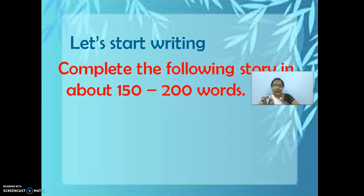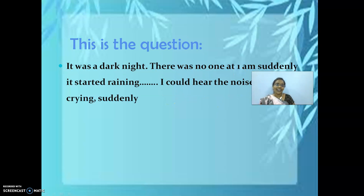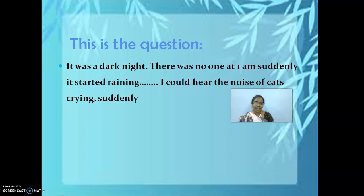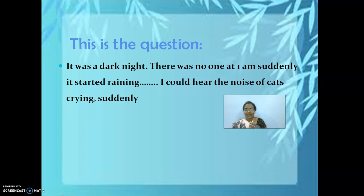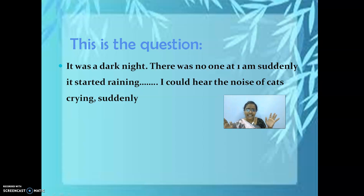Let's start writing the story now. Complete the following story in about 150 to 200 words — word limit plays an important role. This is the story as it will be given in your board exam. This is the question with which you are going to develop your story: 'It was a dark night. There was no one at 1am. Suddenly it started raining. I could hear the noise of cats crying. Suddenly...'